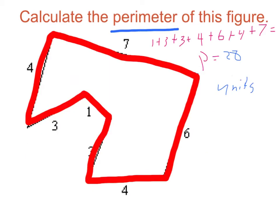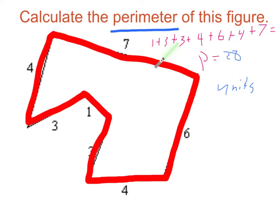To calculate the perimeter — we have to calculate the perimeter of this figure. So, this is four, three, one, three, four, six, seven. One plus three plus two plus four plus six plus four plus seven equals. Perimeter equals 28 units.